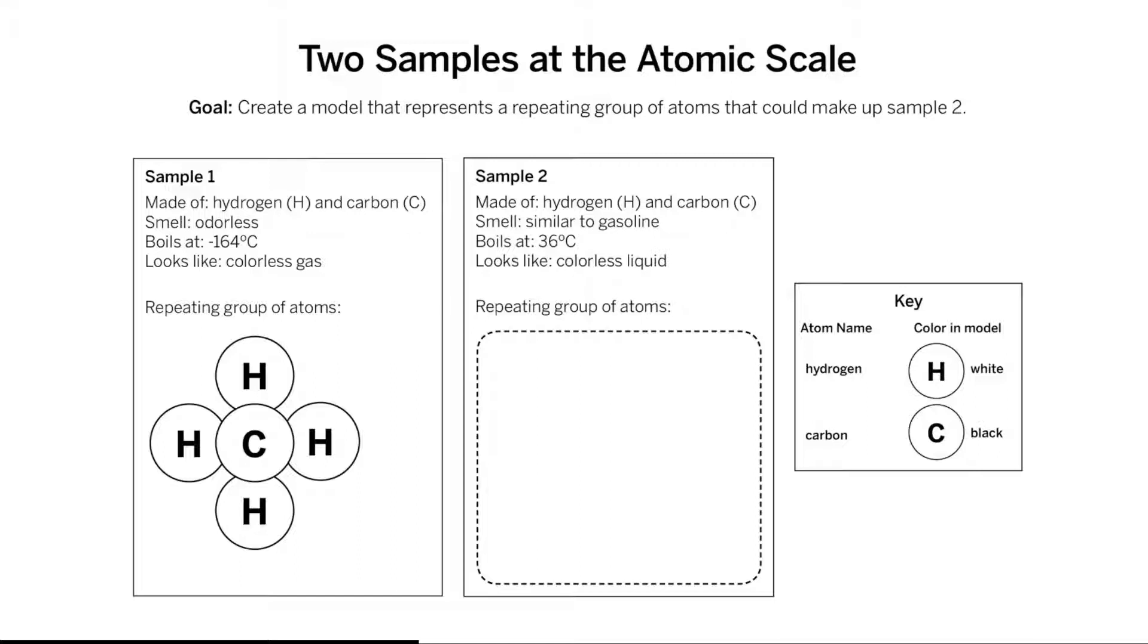The substances in both samples are made up of hydrogen and carbon atoms. A color key is provided so you can color in each of the atoms that make up samples 1 and 2, although this is not required. Hydrogen is white in the model, so you would only need to color in the carbon atoms.